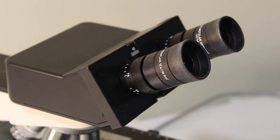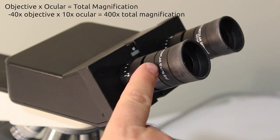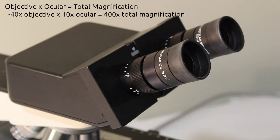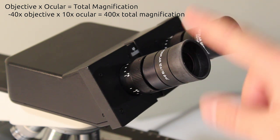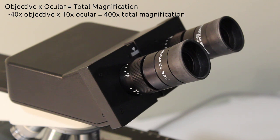The first is they actually help determine your total magnification. So for example here I have a 10x ocular so the total magnification of my microscope will be the magnification of the objective lens multiplied by the magnification of the ocular. So for example a 40x lens and a 10x ocular would give you 400 times total magnification.